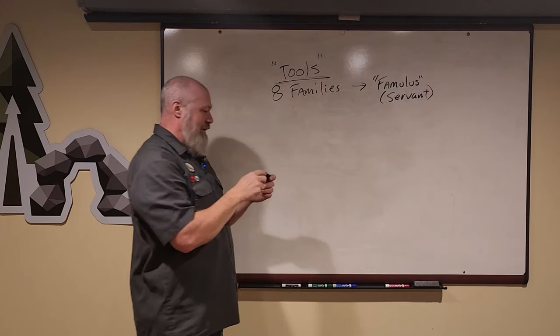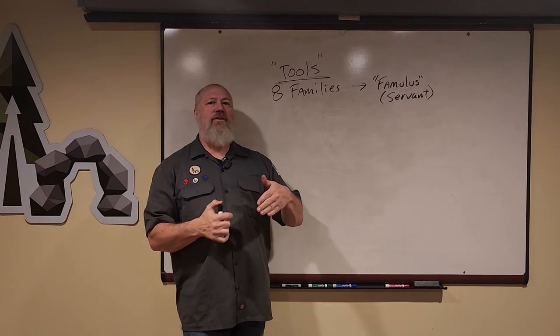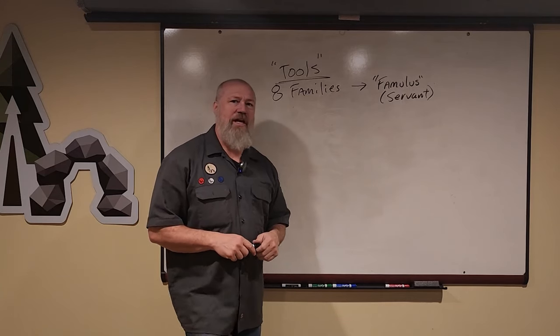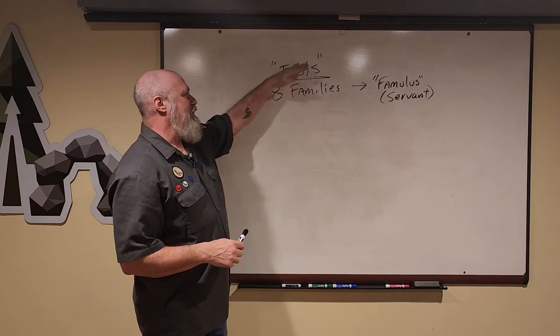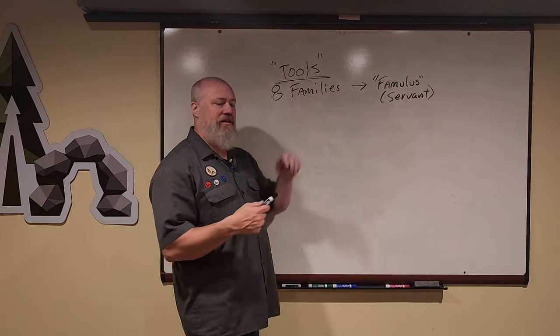So just like your family, your mom, dad, siblings are your servants in the sense that they're serving to guide you into becoming a productive and functional member of society, the eight families of tools that Uncivilized Vitality uses are your servants to get things done.